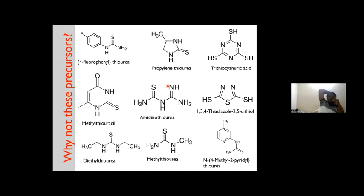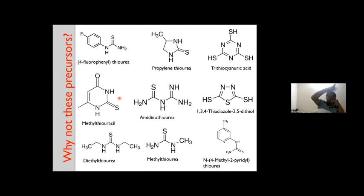Why not try precursors with similar molecular structures — instead of thiourea, methyl thiourea, amido thiourea, or diethyl thiourea? Our research group is focusing on amido thiourea, methyl thiourea, and thiourea to establish the unique differences between these precursors and show that the precursor plays an important role in doping. The literature is open, and it is a very good area of research.